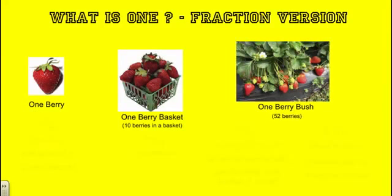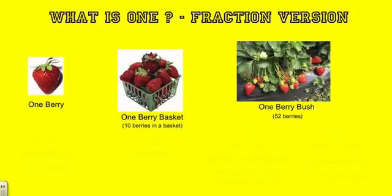We are now going to look at the berries from a fraction point of view. So again, we're looking at one strawberry basket. There's 10 berries in the basket, which is 10 of 10, or 1 whole. Remember, 10 divided by 10 equals 1.